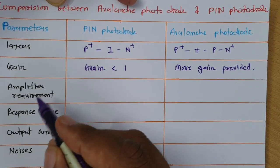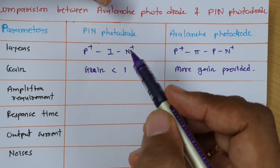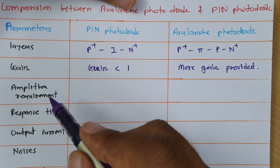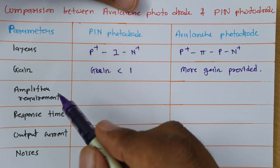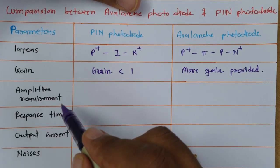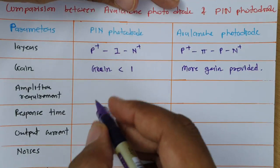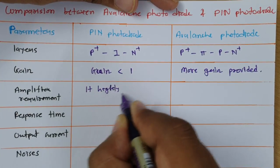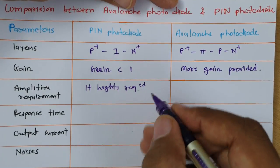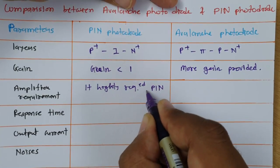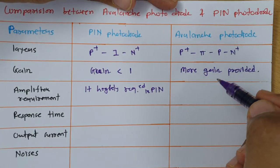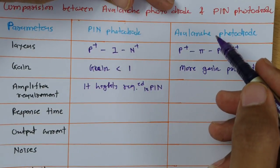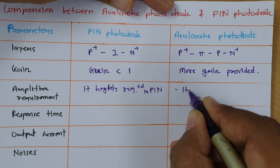Next is amplifier requirement. In PIN photodiode, the generated photocurrent will be very less. So before we use that received light signal in terms of current, we should be amplifying it. Therefore, amplifier requirement is always there with PIN photodiode — it is highly required. While avalanche photodiode provides gain, so an amplifier is not required in the case of avalanche photodiode.